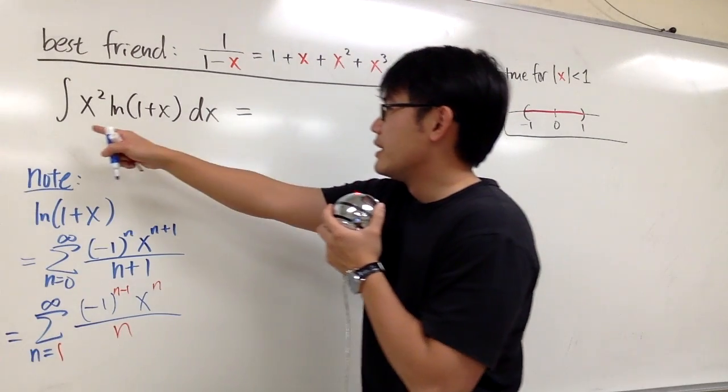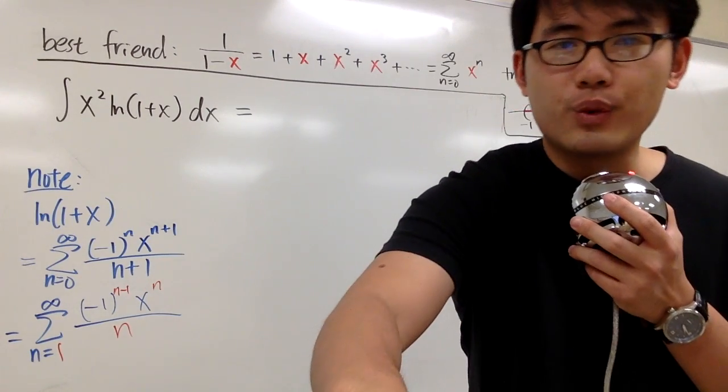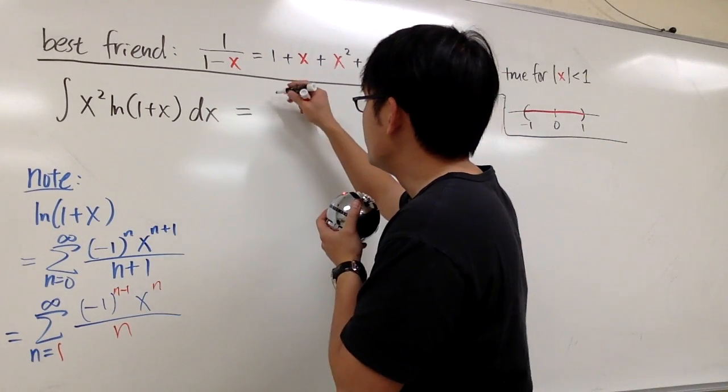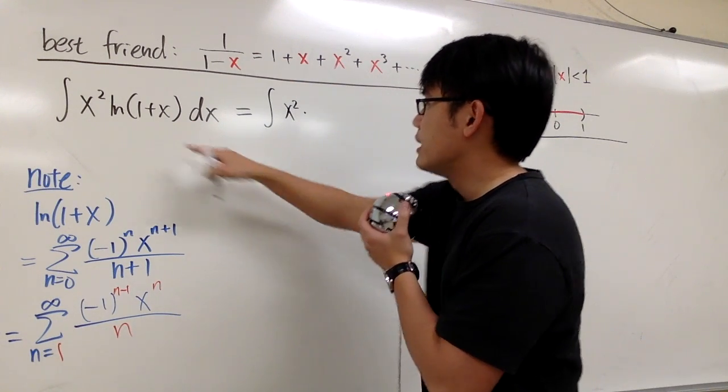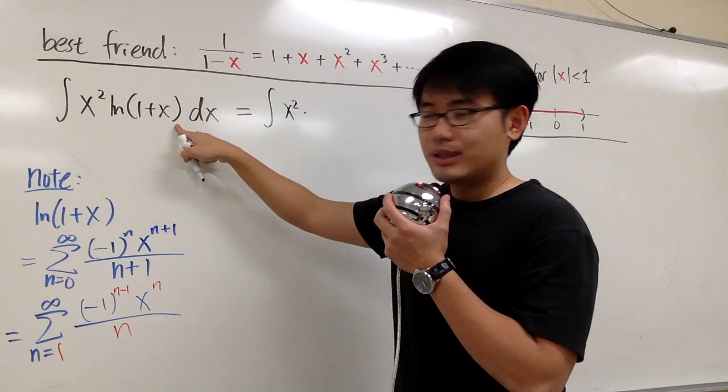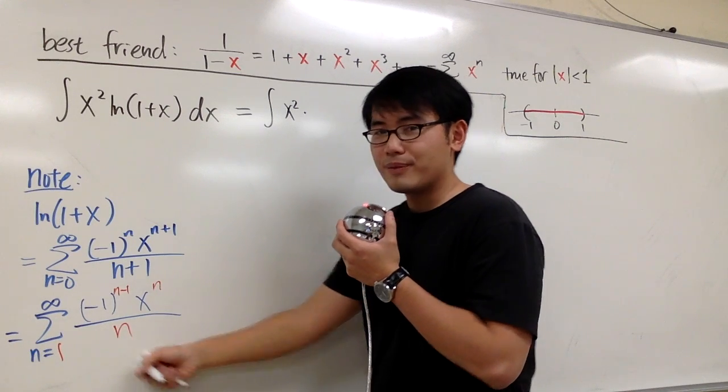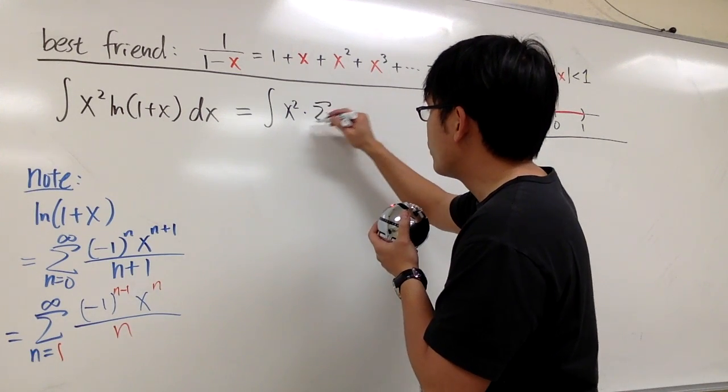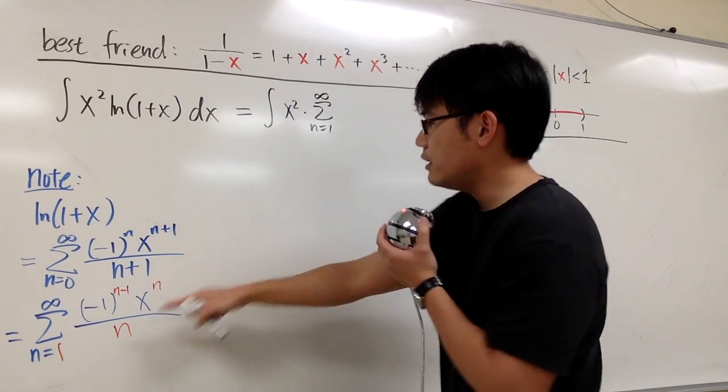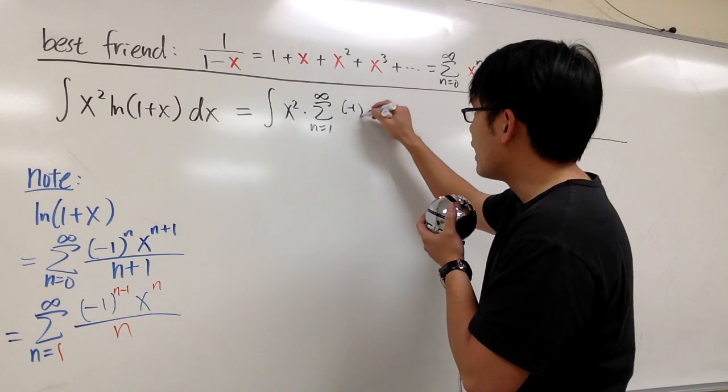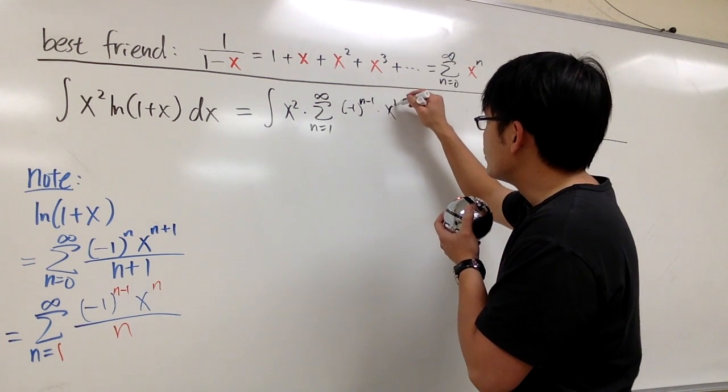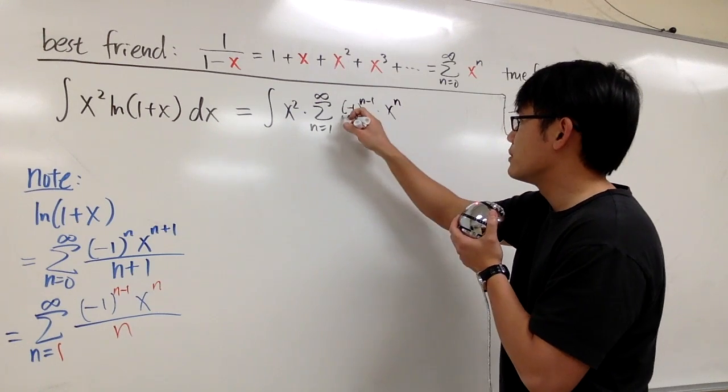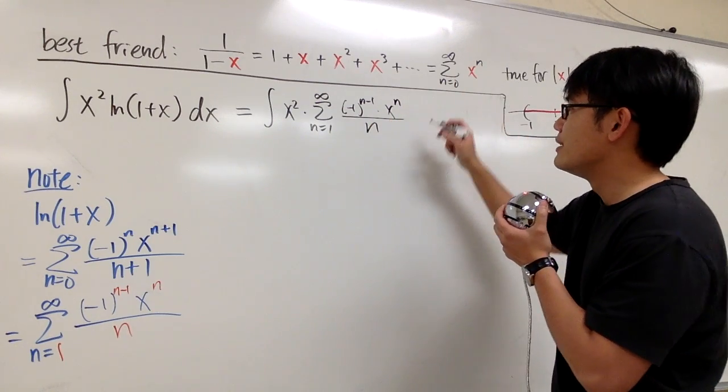Here we are going to go ahead and integrate this, which is integral of x squared times ln of 1 plus x, which we know we are going to use this now. So multiply by sigma when n goes from 1 to infinity, and then we have negative 1 to the n minus 1 power times x to the n power over n, and then dx.